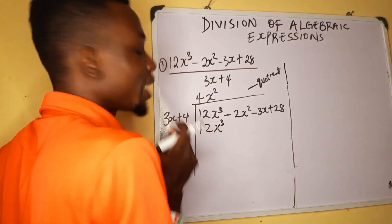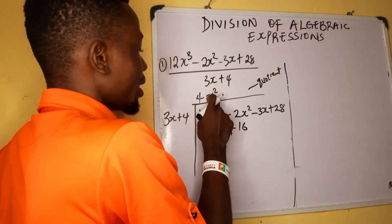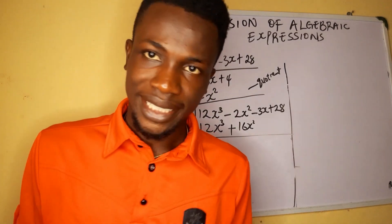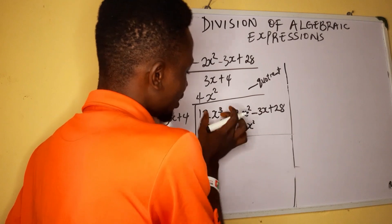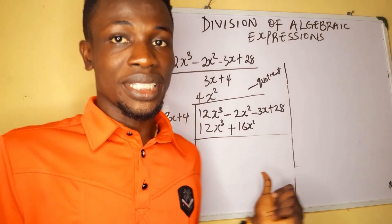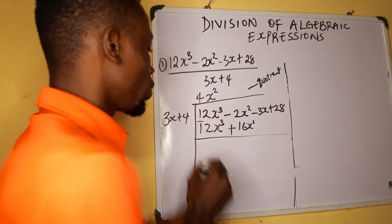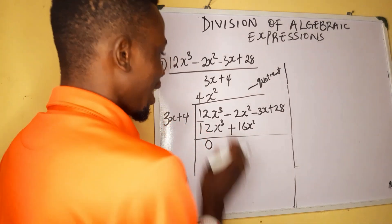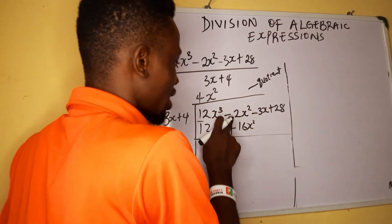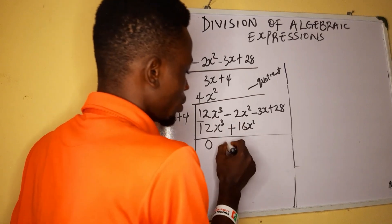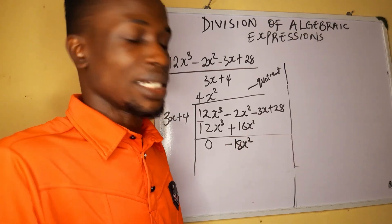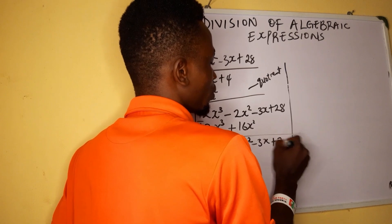Then use the same expression and multiply: 4 times 4 is 16, giving us plus 16x squared. Now we want to eliminate the matching terms. We place a subtraction sign here so that 12x cubed minus 12x cubed becomes 0. Then, negative 2x squared minus positive 16x squared gives us minus 18x squared. Bring the rest down: minus 3x plus 28.